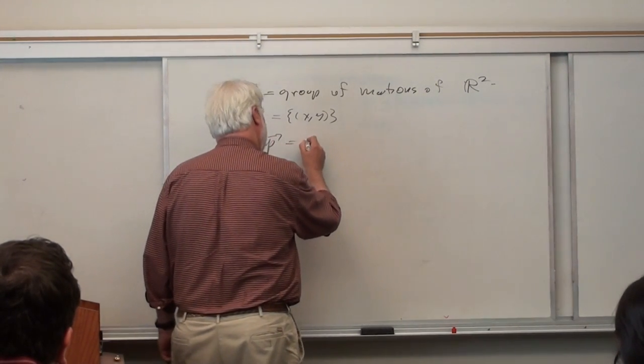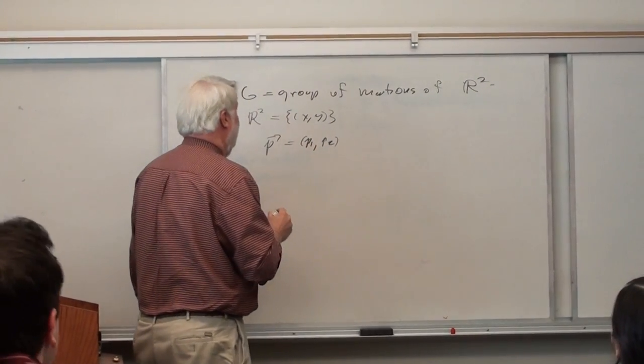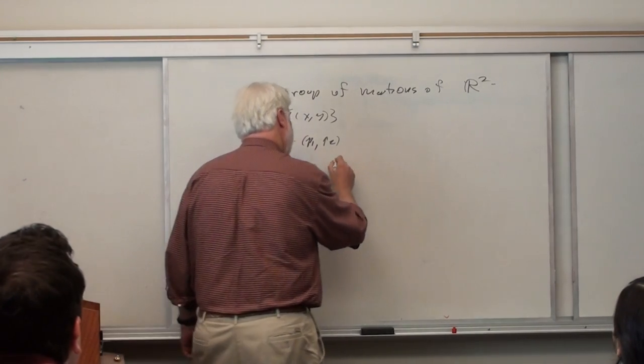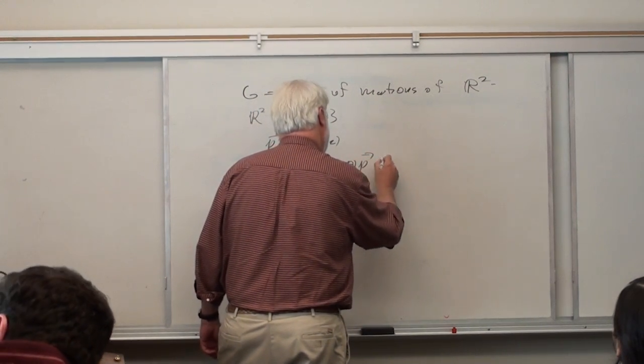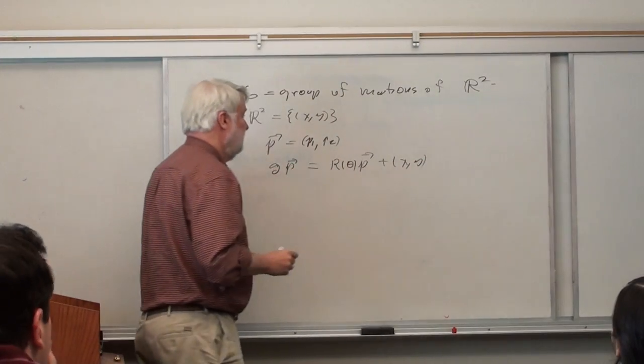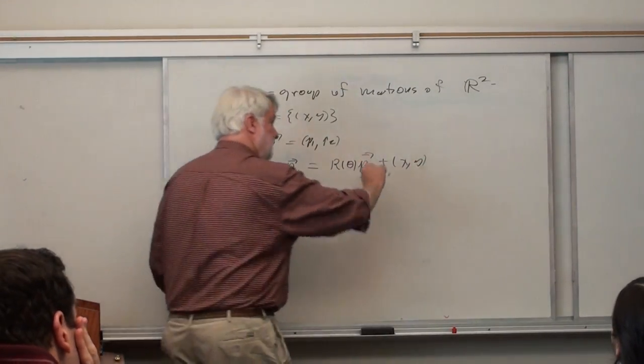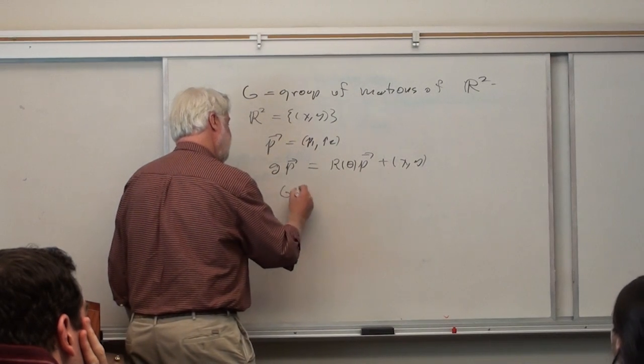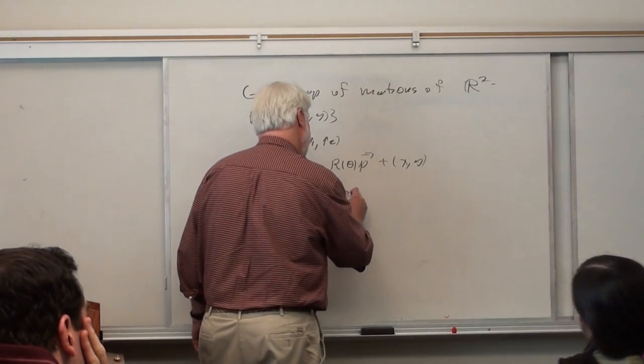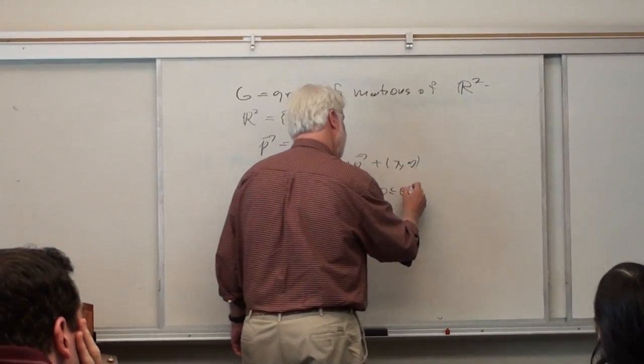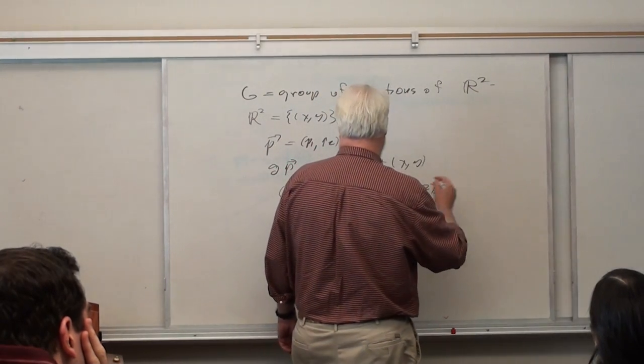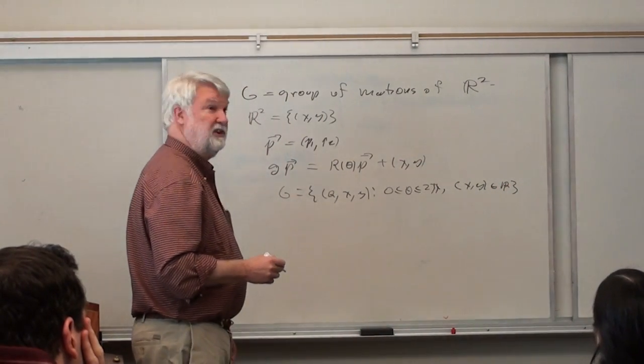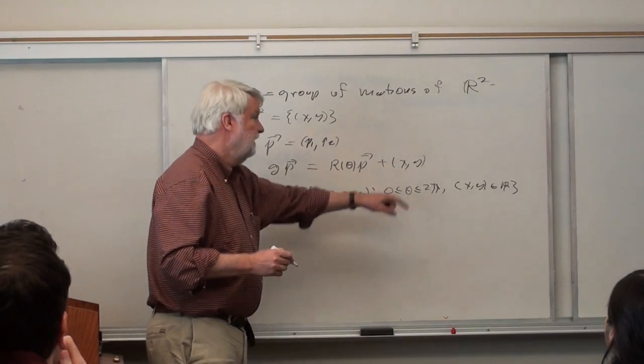If P is a vector P1, P2, then G of this P is going to be a rotation by, let's say theta, and then a translation. So I take this, rotate it around the origin, and then translate it by X. So G is described by these three numbers. G, in some sense, is the set of numbers theta, X, Y, with zero less than or equal to theta less than or equal to 2 pi. It's a three-dimensional set. Basically it's a topological space, just a circle crossed with the plane.